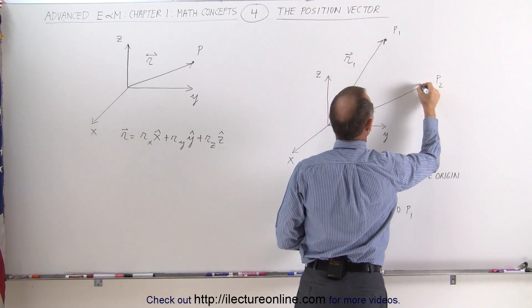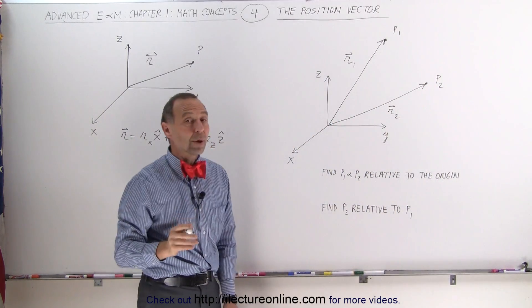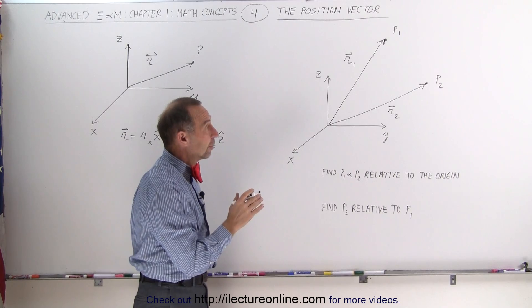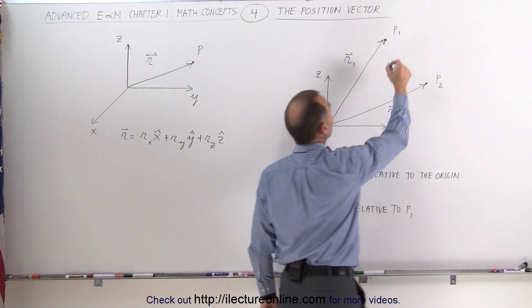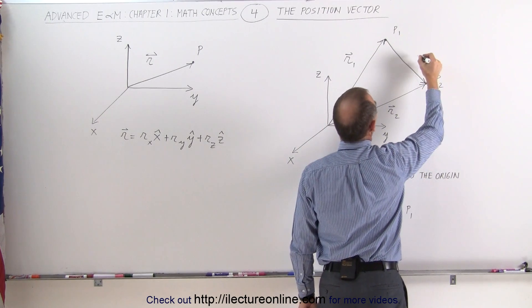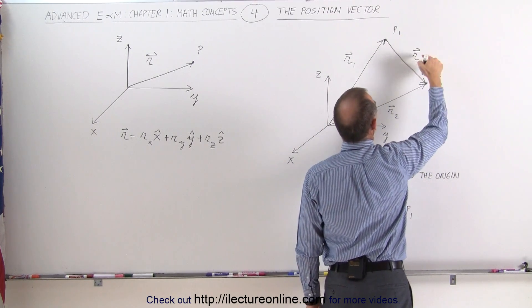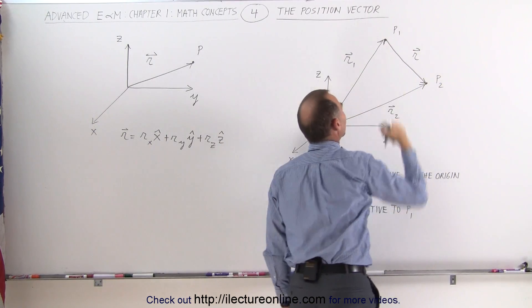And here's the second vector, the position vector to point 2. But now what we want to do is we want to find the vector that displays the position of point 2 relative to point 1, which would be this vector right here. And let's call this vector the r vector, that's the position vector that describes the position of point 2 relative to point 1.